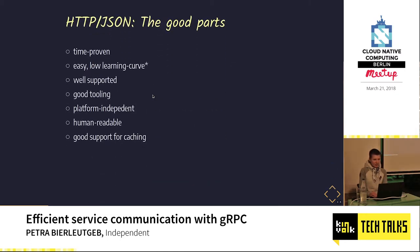I'm not saying that HTTP JSON is bad — it's been around for quite some time, and it's really time-proven. A big part of its success is that it's very easy to get started, there's a lower learning curve, it's really well supported, it's got great tooling, it runs everywhere, and it's easy to debug since it's human readable. You can open Wireshark and actually read the payload of each message. HTTP also has great support for caching — that's something gRPC has only experimentally at the moment, but I think it will be there soon.